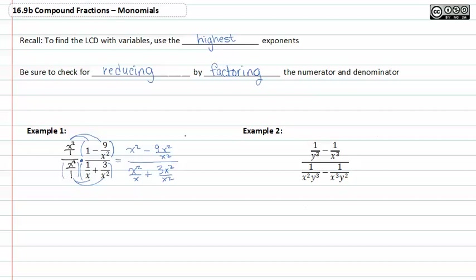I can very clearly simplify this. The x squared divides with the x squared in the second term of the numerator, and x divides out of this one, and I'm left with just an x, and x squared again divides out of that one. So my terms now are x squared minus nine, all over x to the first power,